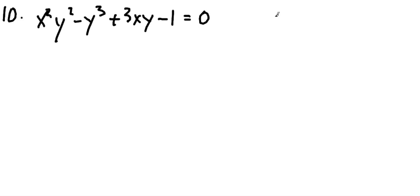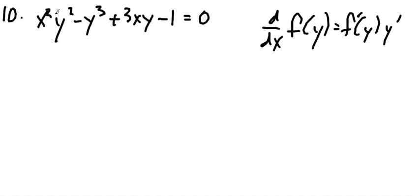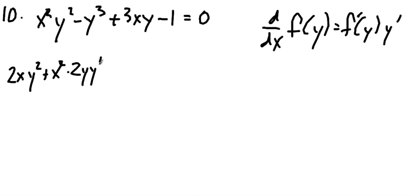In other words, the derivative with respect to x of a function of y is the normal derivative of f applied to y, times y prime. Now, x squared y squared requires the product rule because it's x squared times y squared. So I get 2x times y squared plus x squared times the derivative of y squared, which is 2y times y prime.